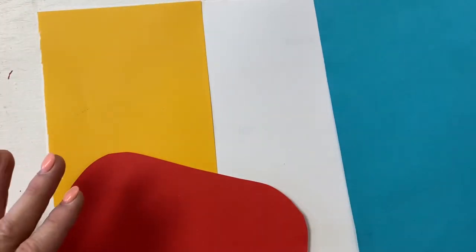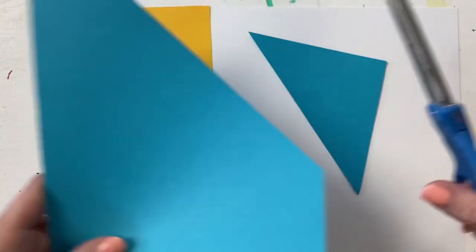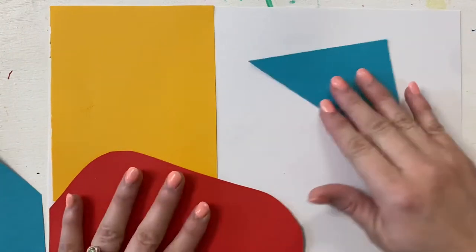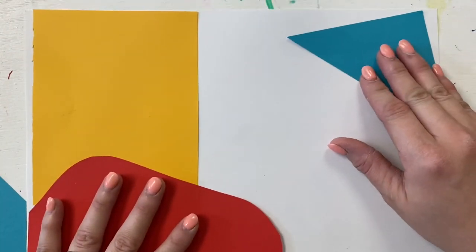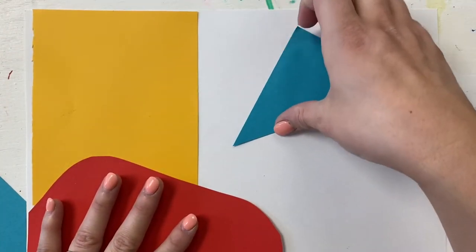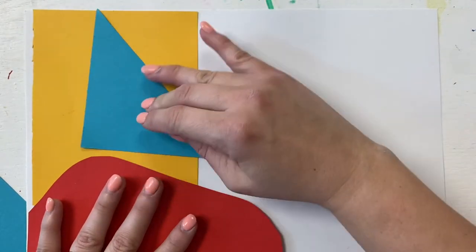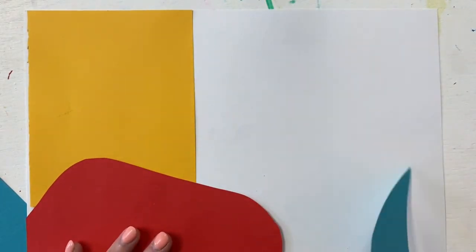Maybe I take the blue and I could cut a triangle. Maybe that could go in the corner. Maybe I could overlap it onto some of the yellow or the red.